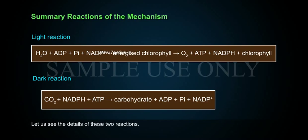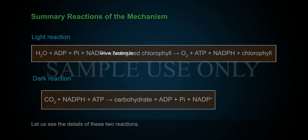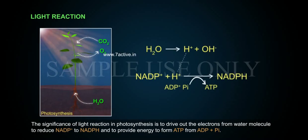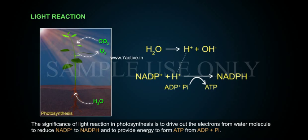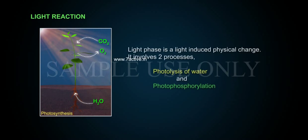Let us see the details of these two reactions. The significance of light reaction in photosynthesis is to drive out electrons from the water molecule to reduce NADP+ to NADPH, and to provide energy to form ATP from ADP + Pi. The light phase is a light-induced physical change involving two processes: photolysis of water and photophosphorylation.